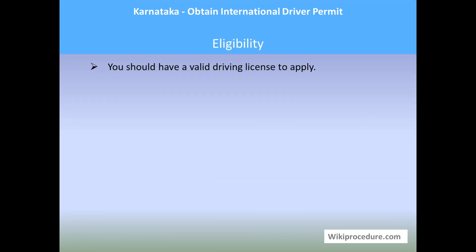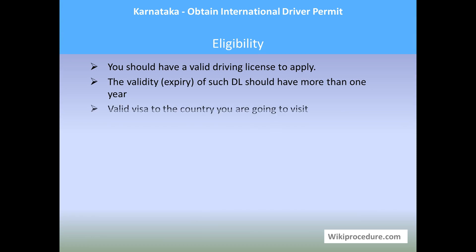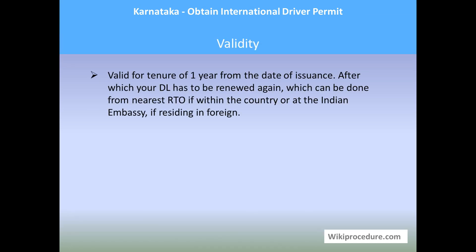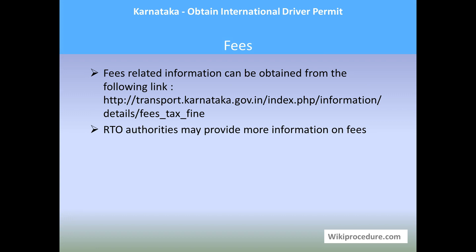For eligibility, you must have a valid driving license to apply, and its expiry should be more than one year away. A valid visa to the country you are visiting is also required. The IDP is valid for one year from the date of issuance, after which it must be renewed — this can be done at the nearest RTO within the country or at the Indian embassy if you are residing abroad.